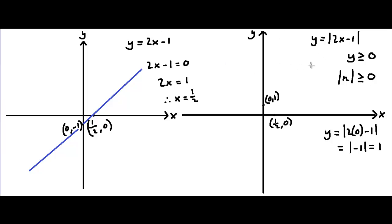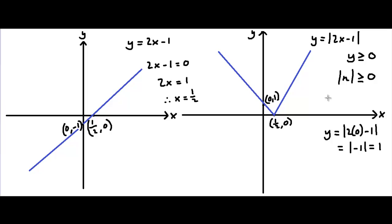So we're going to put the point (0, 1) over here. This is what the graph of y equals the absolute value of 2x minus 1 would look like. You put a line going towards (1/2, 0) down on this graph, and then you reflect the arm from y equals 2x minus 1 so that it goes in an upwards direction, forming a new line going through the coordinate (0, 1). The graph of y equals the absolute value of 2x minus 1 should look like this.